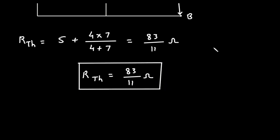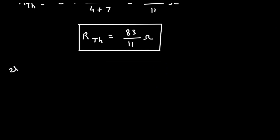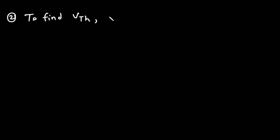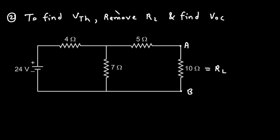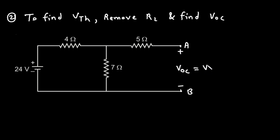Next step is to find the value of VTH. Step number 2 is to find VTH. To find VTH, we have to remove RL and find VOC. VOC is the open circuit voltage. So let's remove this RL. This will be our VOC — here positive and this negative. So this voltage will be our VTH. VOC is equal to VTH; VOC stands for open circuit voltage.